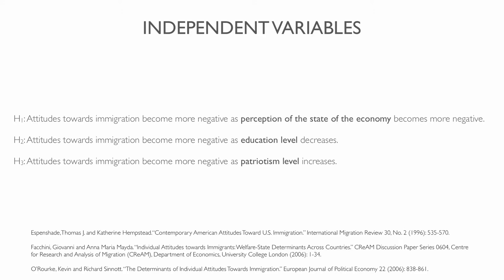Here I examine if, as expected, attitudes become increasingly negative as individuals' perception of the state of the economy also becomes more negative. It is also important to consider non-economic factors, so my second independent variable is level of education. High levels of education are thought to lead to more positive perceptions of immigration, as higher education is associated with higher racial and ethnic tolerance, and therefore more positive attitudes towards immigration. Finally, some scholars have also explored the possibility of patriotism being a strong indicator of attitudes towards immigration. As patriotism increases, I expect attitudes towards immigration to become more negative.